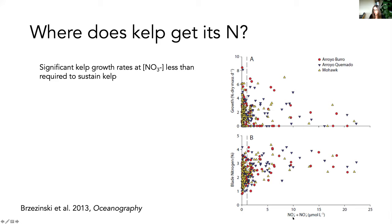Every living thing needs nitrogen to build proteins and enzymes, so kelp is getting nitrogen from somewhere, and we want to figure out where.